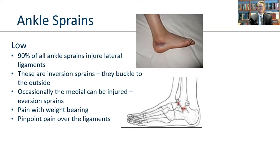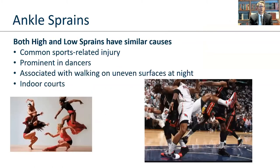Low ankle sprains account for 90% of all ankle sprains and injure the lateral ligaments — this is an inversion sprain, or rolling to the outside. These are consistent with pain on weight bearing and pinpoint pain on the outside of your ankle. Both high and low ankle sprains have similar causes: sports-related injuries, prominent in dancers, walking on uneven surfaces, and indoor courts where the shoe grabs the floor and the ankle keeps going.